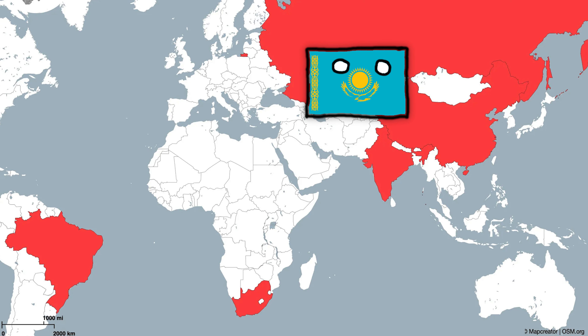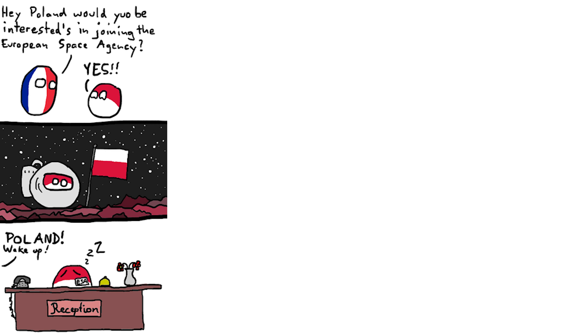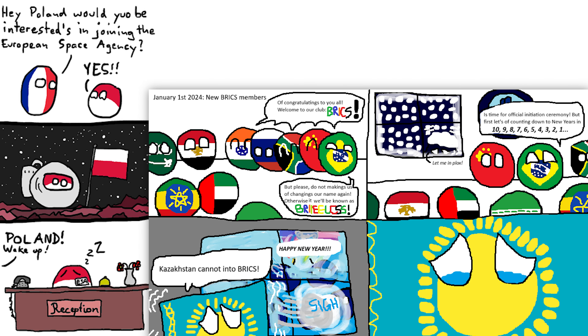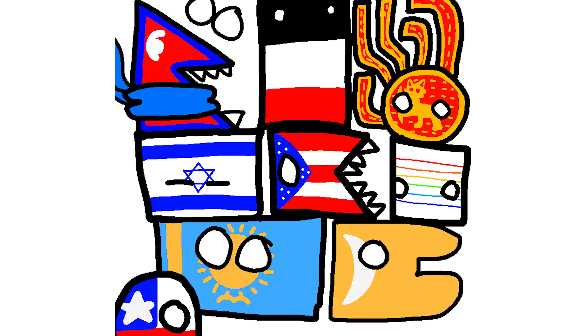Coming back to Kazakhstan, they tried applying for membership many times, but even with the newest BRIC expansion, Kazakhstan is sadly not included — on January 1st 2024, Egypt, Ethiopia, Iran, and the United Arab Emirates became the new BRICS members. Everything I just told you was a freaking lie, because that might be the most common joke on the internet — similarly to how Poland can't into space, Kazakhstan can't into BRICS. That's a very popular meme in these comics.